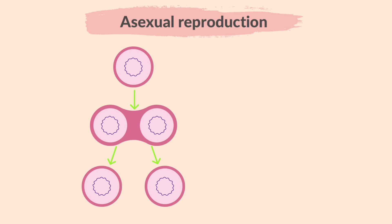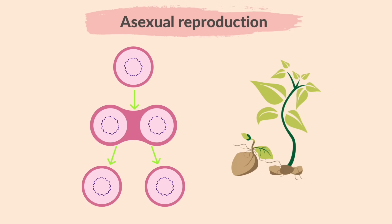Examples of asexual reproduction include binary fission — this is when a bacterial cell produces exact genetic copies of itself — and new potato plants developing from the buds or eyes of a potato tuber. The resulting plant is genetically identical to the parent plant.